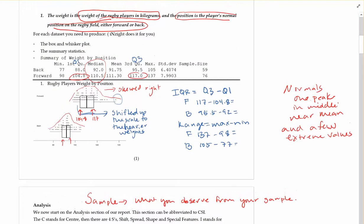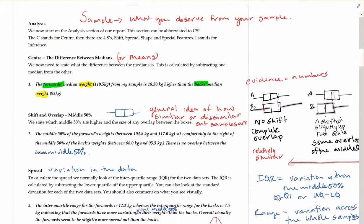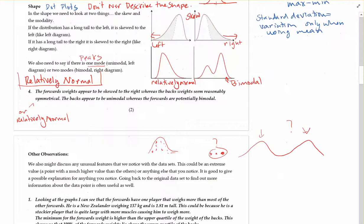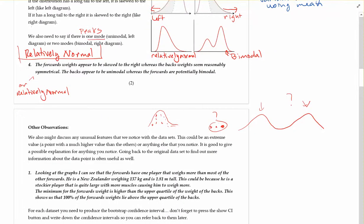So if we look at our graph. We do see that we had this tail skewed to the right for the forwards with some really extremely big values. So what we can say about this kind of information. If we look at those graphs is looking at the graph I can see the forwards have one player that weighs more than most of the other forwards.